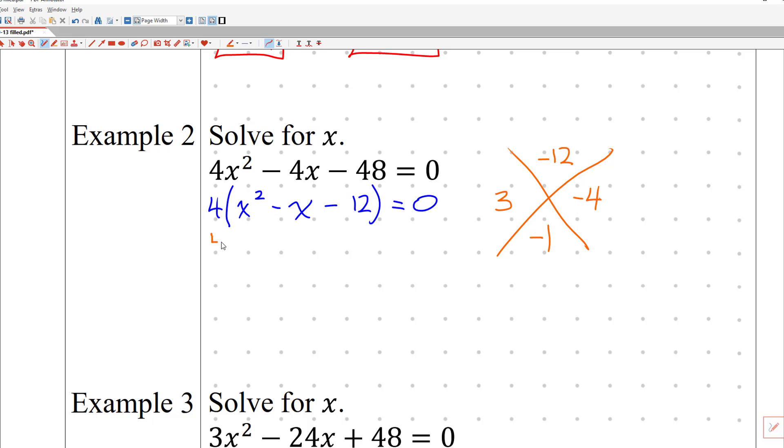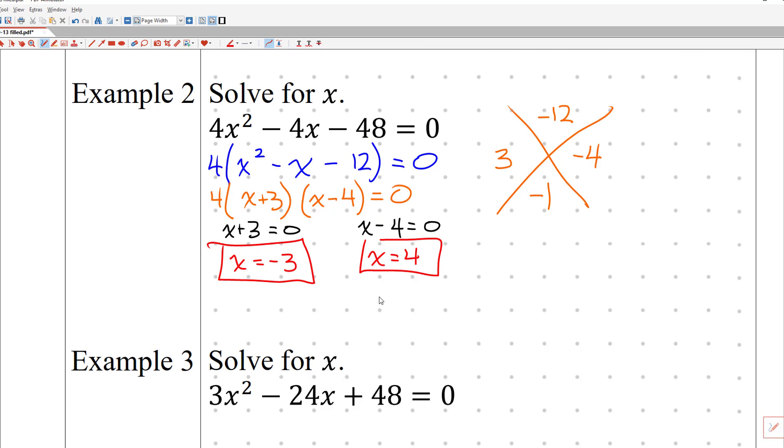I'm going to rewrite this as 4 times the quantity of x plus 3 times the quantity of x minus 4, all being set equal to zero. Using the zero product property here to say that x plus 3 is set equal to zero, and x minus 4 is equal to zero. You're just going to subtract 3 from both sides. So x is equal to negative 3. Add 4 to both sides, x is equal to 4. And that is the order that you'd enter into Khan Academy as well.